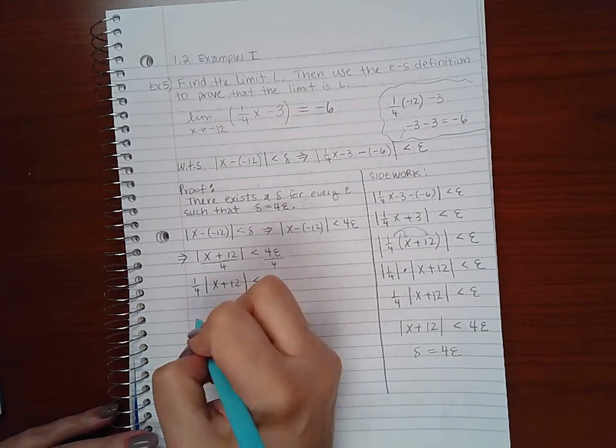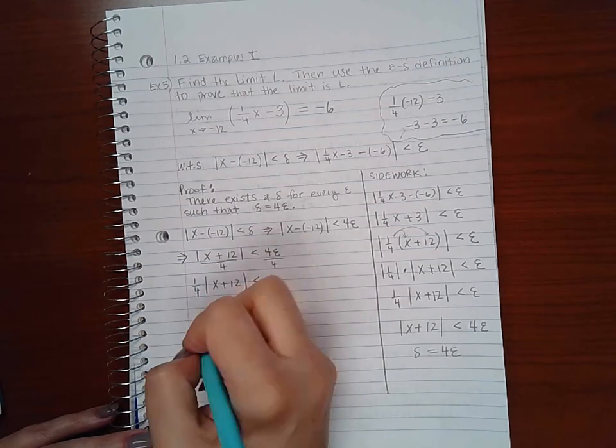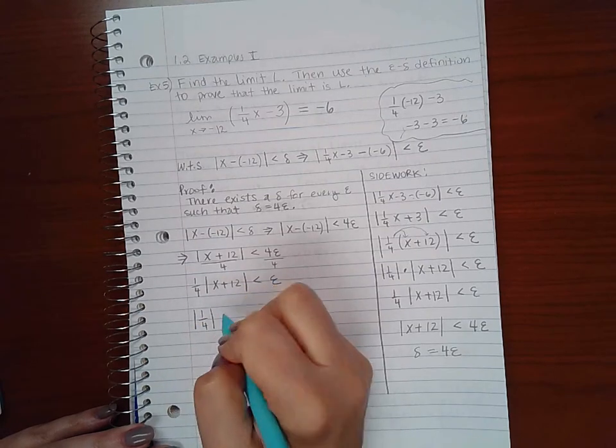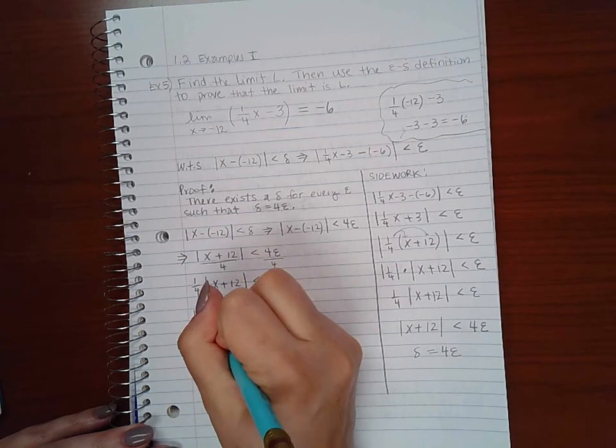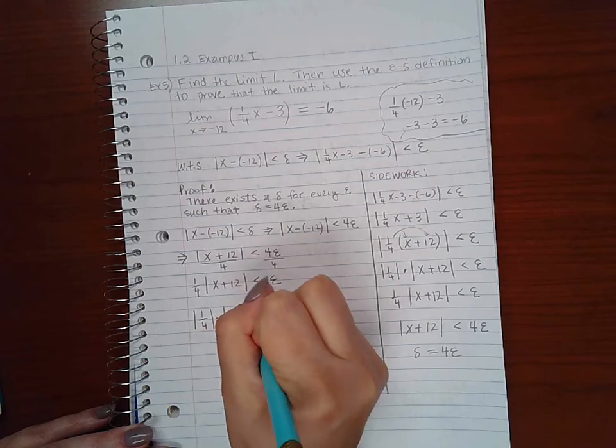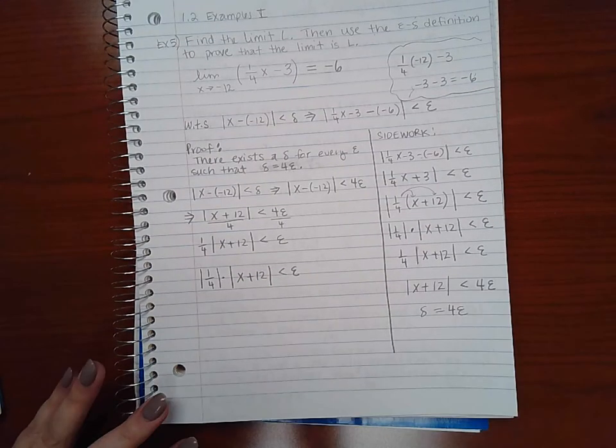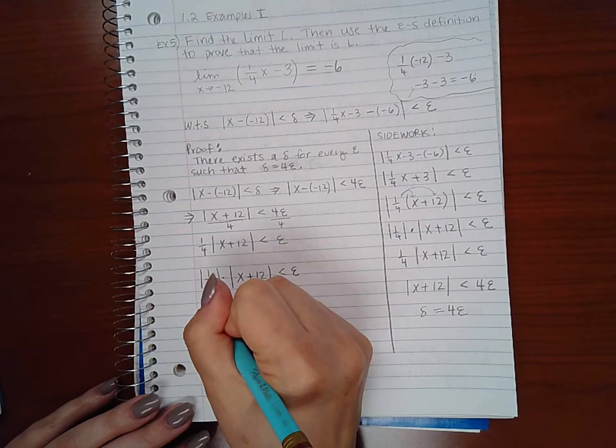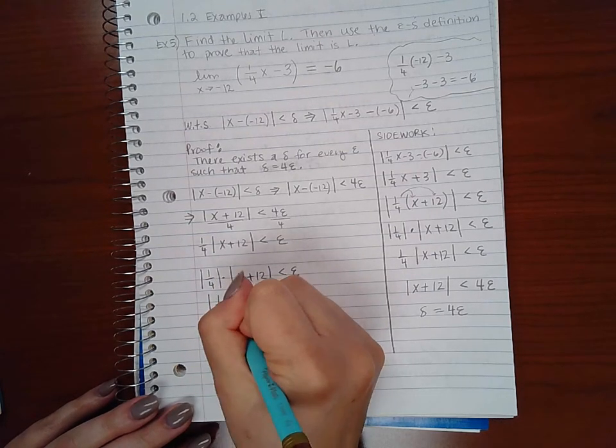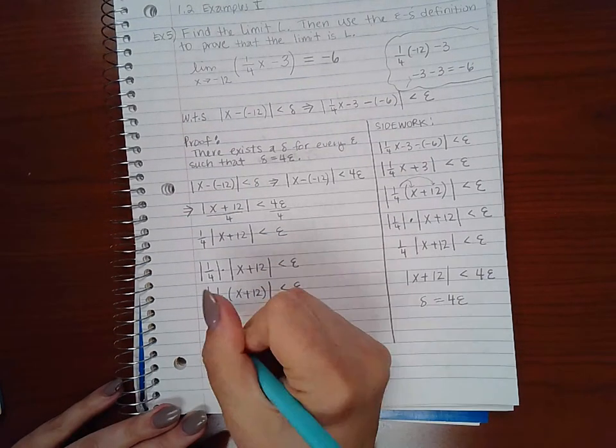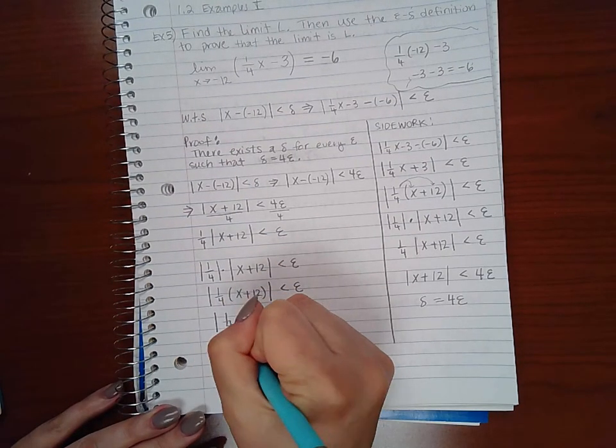Then I'm going to bring in this 1/4, but before I do I have to put bars around the 1/4. Even though it's positive, the only way for me to combine it with the other statement in bars is to have it in bars itself. Then now I can bring in the 1/4 into the bars. Then I can distribute my 1/4.